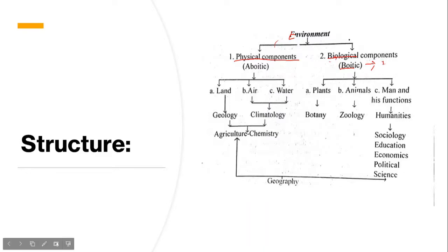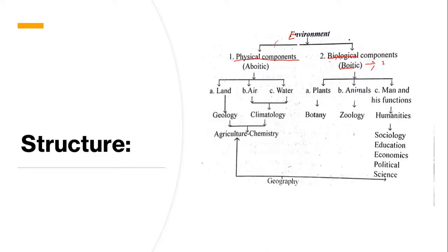More scientifically, when we discuss about ecosystem, we use the terms physical components and biological components. Whenever we discuss something non-living, we will use the term physical component, and whenever something living is discussed, we use the term biological component. Now let's see how the different components of environment are orderly placed and how they have equal influence on each other.